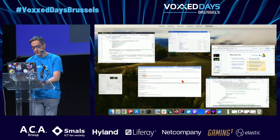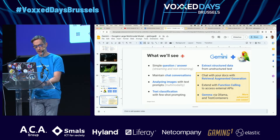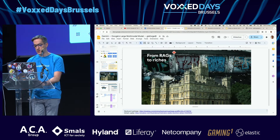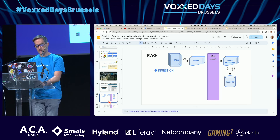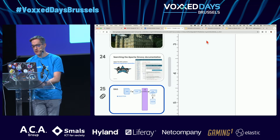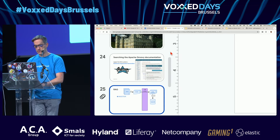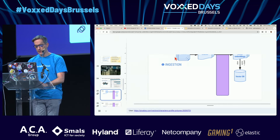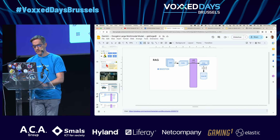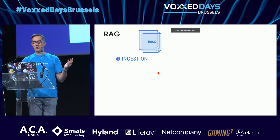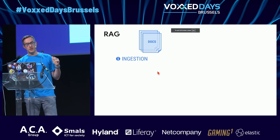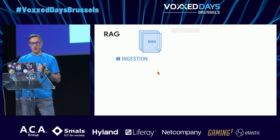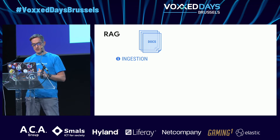I'd like to show you RAG — Retrieval Augmented Generation. It's a technique which works in two phases. You have some documents — your own private company information, stuff not part of the language model's own knowledge.